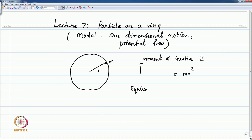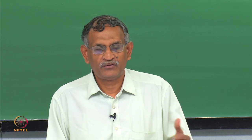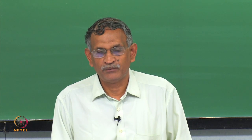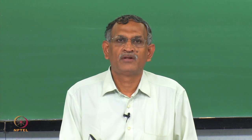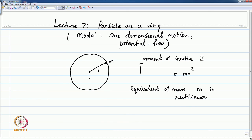The moment of inertia is essentially the equivalent of mass in rectilinear motion. Newton's first law says that an object at rest will remain at rest and an object moving at a certain velocity will continue to move with constant velocity as long as no forces act on it. The concept of inertia came from that, and in the case of circular motion it is the moment of inertia about an axis perpendicular to the plane of the motion.